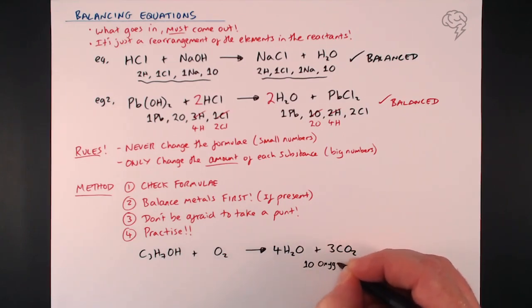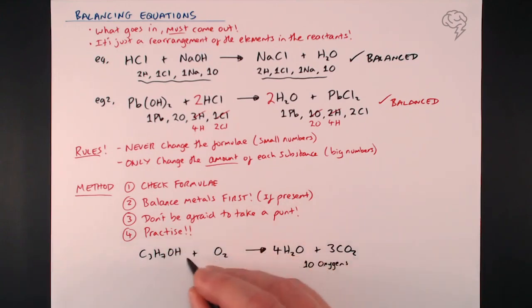Over here we've got our O2 which we can use to balance these 10 oxygens out, but there's one cheeky little oxygen over here, so that leaves us with nine oxygen that we need to get from this.